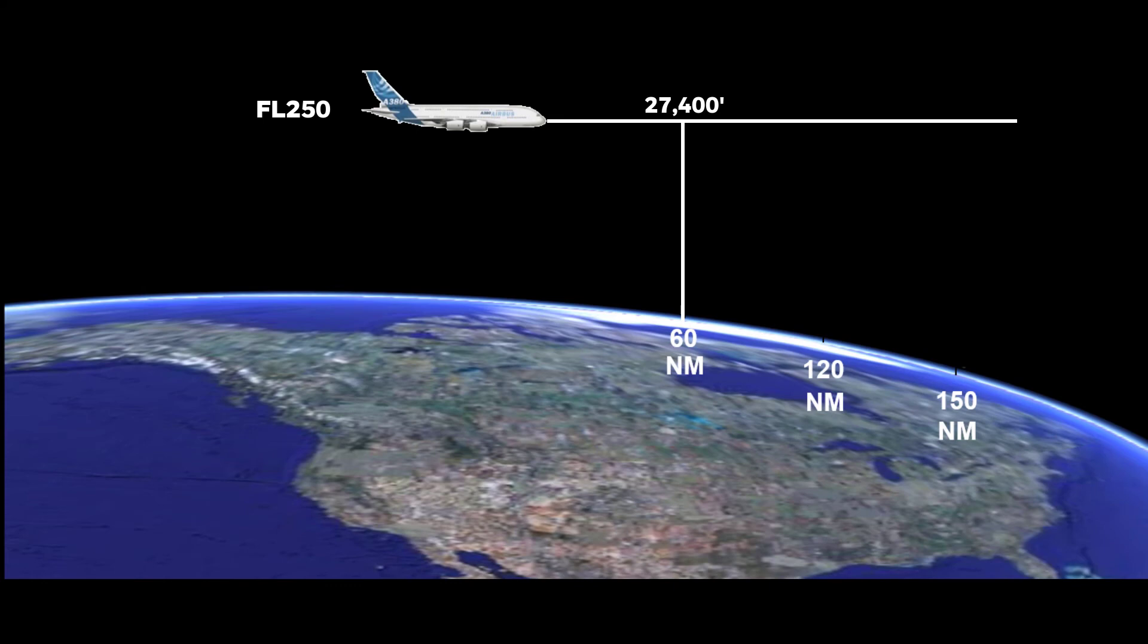If left uncorrected, the effect of the Earth's curvature can be quite significant. In the picture shown, the aircraft is at flight level 250. However, because of the Earth's curvature,